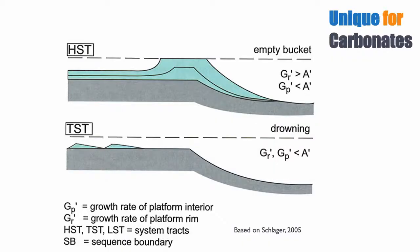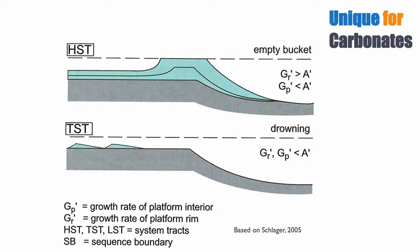Everything discussed applies in some way to clastics, but there are two situations unique to carbonates. During a highstand tract, it's possible that the rate of production on the rim — where you typically have autotrophic organisms like corals — is very high, giving aggradation and progradation on the rim. But the lagoon, the platform itself, may not produce as much as the rim. If that happens, you create what is known as an empty bucket, where there isn't enough sediment production to fill the lagoon. This geometry is unique to carbonates.